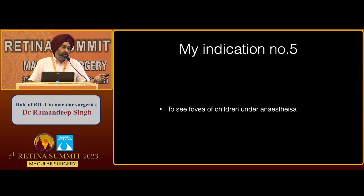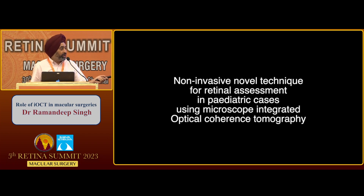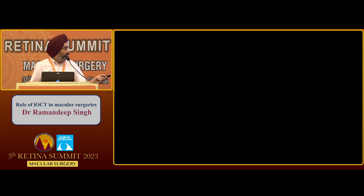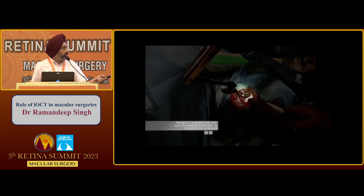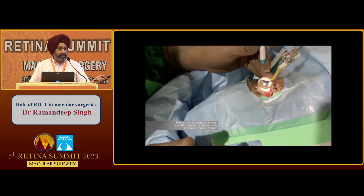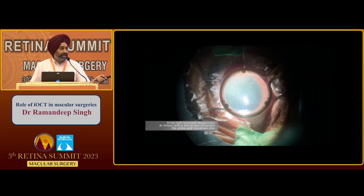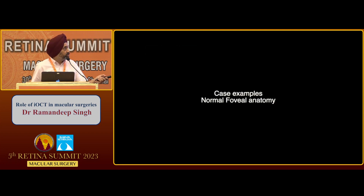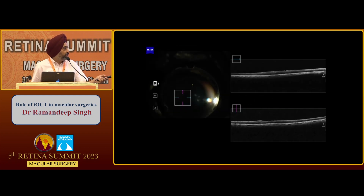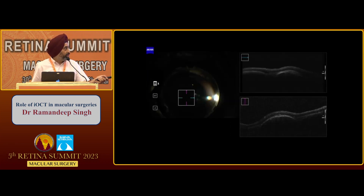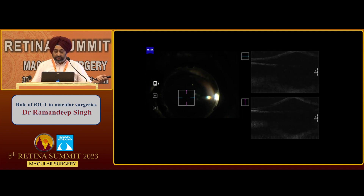We have extended our use because we don't have a dedicated OCT for children in the OR. We found that with exo-illumination, we don't have to take a light pipe into the eye. With exo-illumination and a wide-angle lens, you can do an OCT of these children — you just have to be patient. We were able to see small kids where normal foveal anatomy was absent, including a trauma case where we were suspecting a battered baby syndrome.